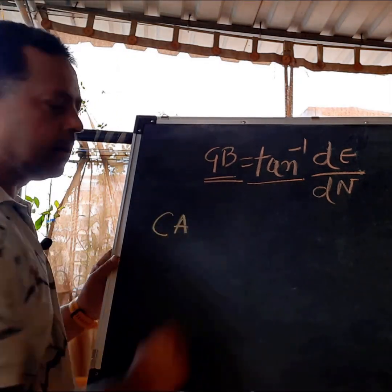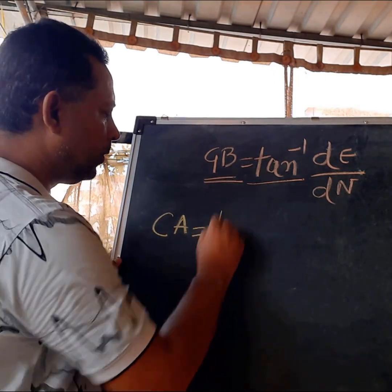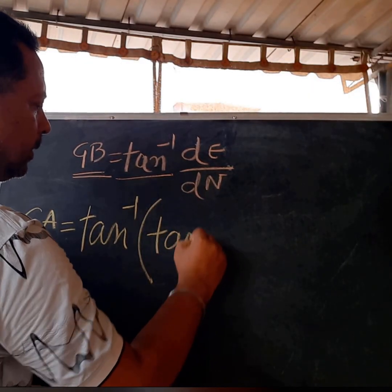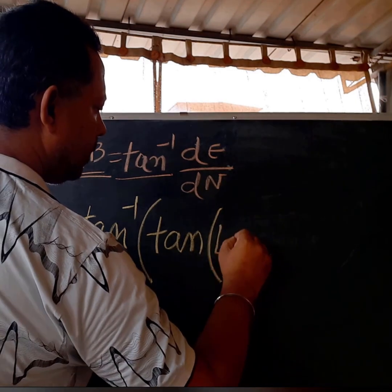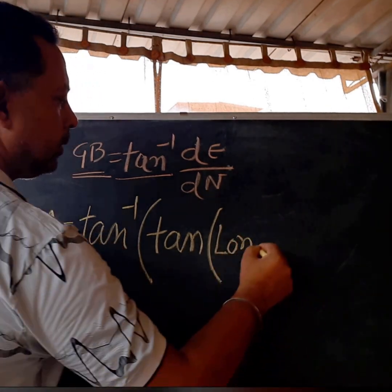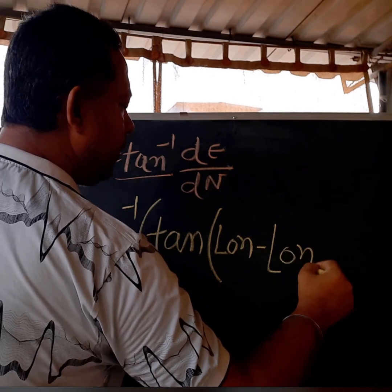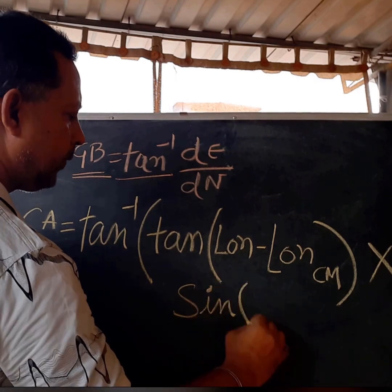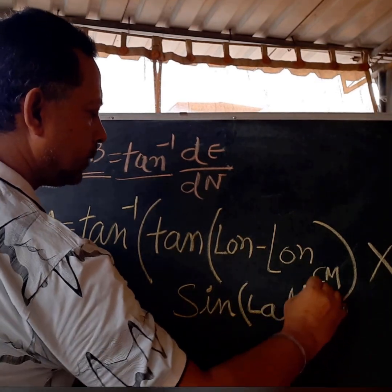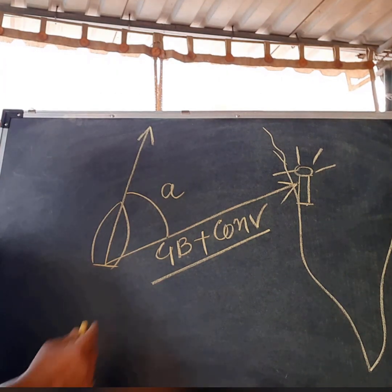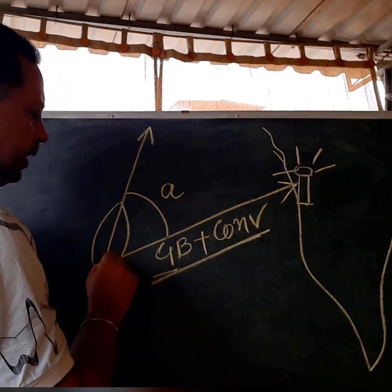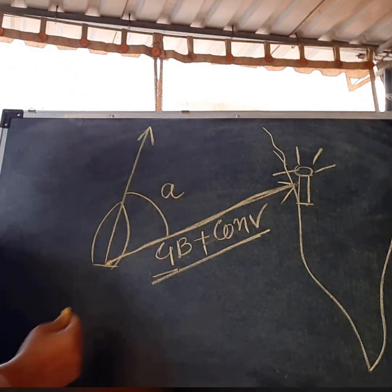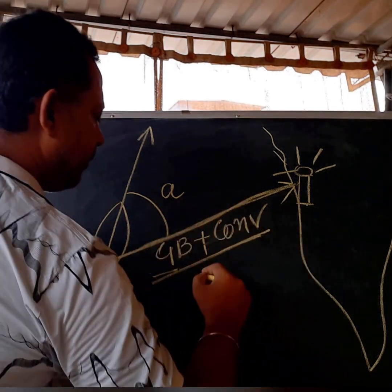How do you find convergency? Convergency is equal to tan inverse of: tan of (longitude minus longitude at the central meridian), multiplied by sine of latitude. So now we have measured the grid bearing and the convergency from our position to the distant lighthouse. As soon as we apply this, the line becomes the azimuth.